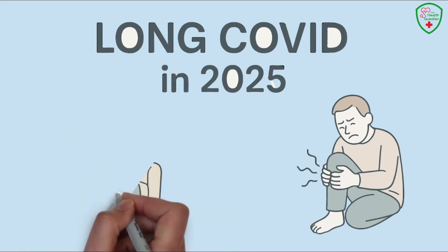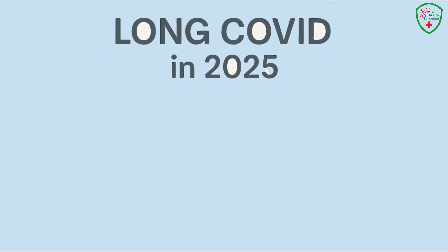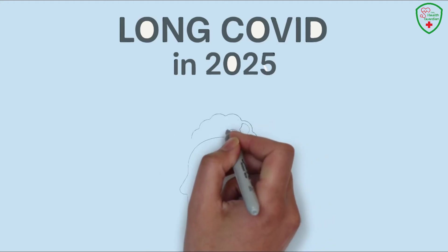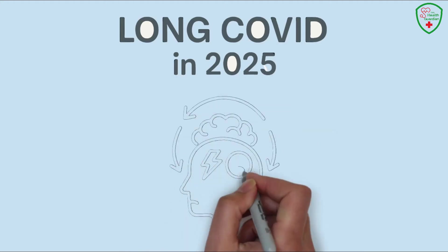Long COVID can also bring back those mental health struggles we talked about, like anxiety that feels like a constant knot in your chest, or depression that dims your world. For some, it's like fighting a battle on two fronts, physical and mental. And it can last weeks or even months, even with the new FLIRT variants.